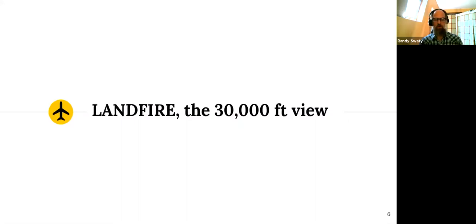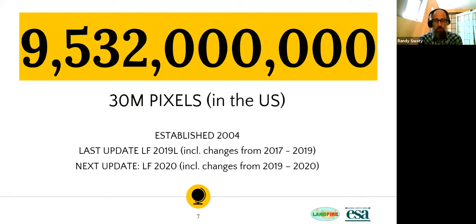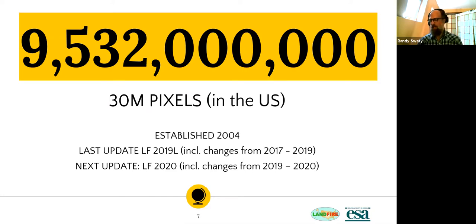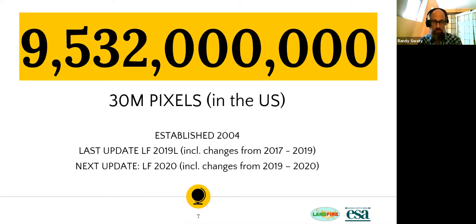A brief overview of LANDFIRE: LANDFIRE labels over 9 billion pixels — just in the United States alone — with over two dozen attributes. LANDFIRE was established in 2004 to characterize vegetation, fire, and fuel characteristics for all lands in the United States, plus insular areas like Puerto Rico and the Virgin Islands. We update the data regularly, and we're getting faster and faster at reducing time between updates. We deliver spatial data at 30-meter resolution.